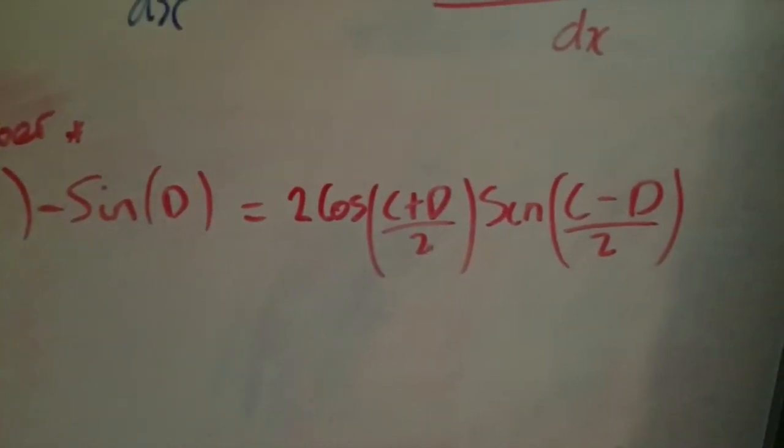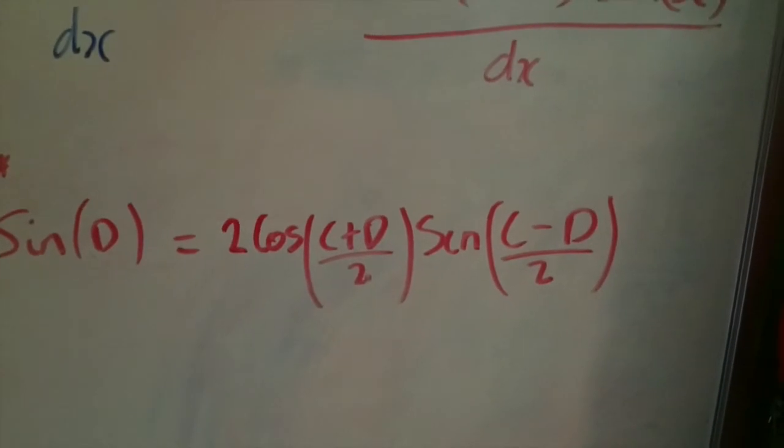What we're going to be looking at is remembering that the identity so sine c minus sine d is equal to 2 cos c plus d over 2 times sine c minus d over 2. Now, what happens when we substitute this identity into this expression here? If I just clear the board and I'll show you that.